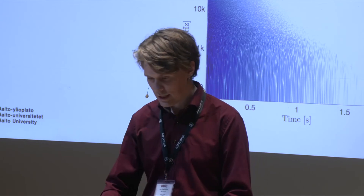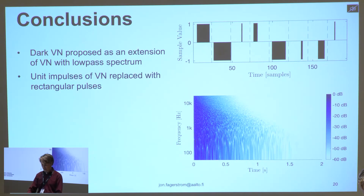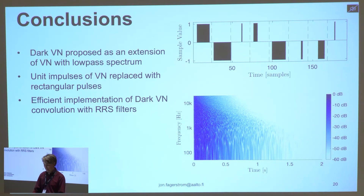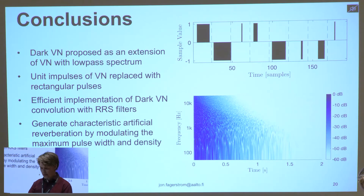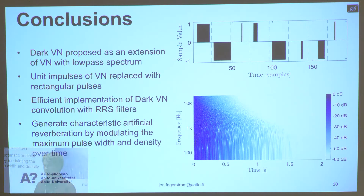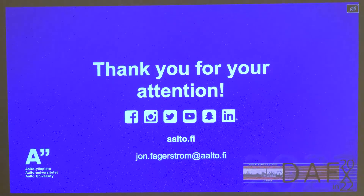To conclude: we proposed the dark velvet noise as an extension to velvet noise which has a low-pass spectrum. The unit impulses of the normal velvet noise are replaced with random-width rectangular pulses to create the spectrum. We proposed an efficient implementation using the RRS filters for convolution. And we showed that you can generate characteristic artificial reverberation by modulating the maximum pulse width and the density parameters over time. Here are some key references, and thank you for your attention.